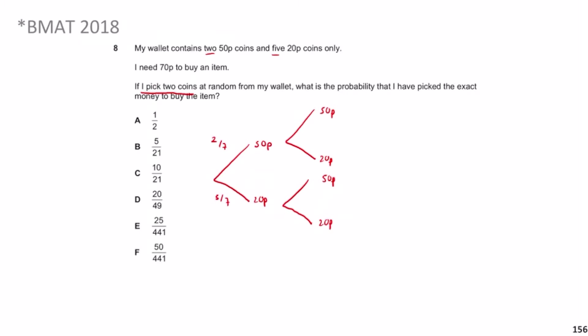Since a coin is not replaced, the second pick is out of six. If the first pick was 50p, there's now one 50p left, so P(50p second | 50p first) = 1/6, and P(20p second | 50p first) = 5/6. If the first pick was 20p, there are four 20p coins left, so P(20p second | 20p first) = 4/6, and P(50p second | 20p first) = 2/6.